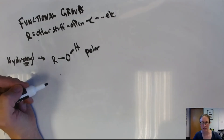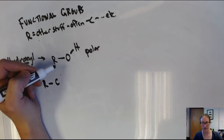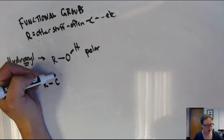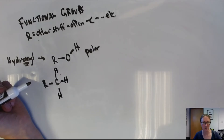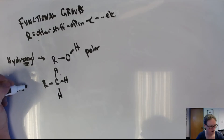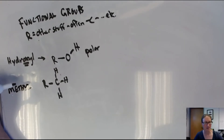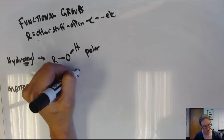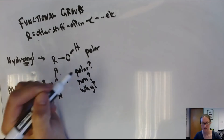We can contrast this with another functional group: a carbon bonded to some kind of R group, and then bonded to hydrogen atoms at the other three positions. This looks very similar to the molecule that we actually started out with, and this functional group is actually referred to as a methyl group. Based on what you know, I want you to think about whether this methyl group is going to be polar or nonpolar, and why.